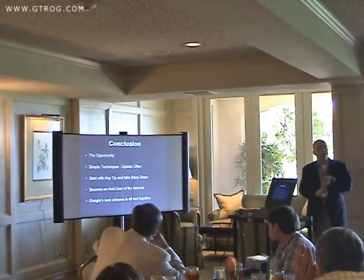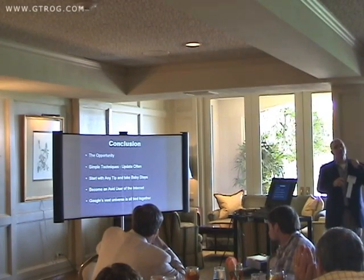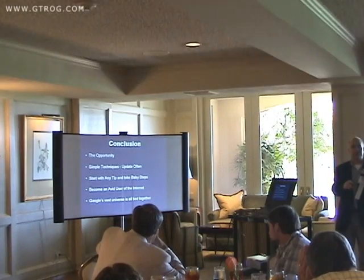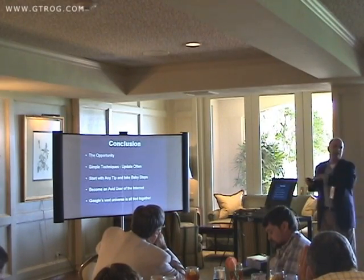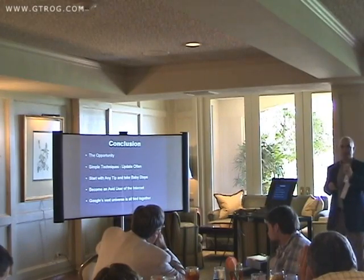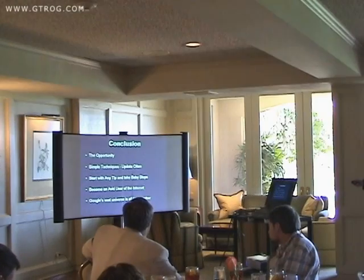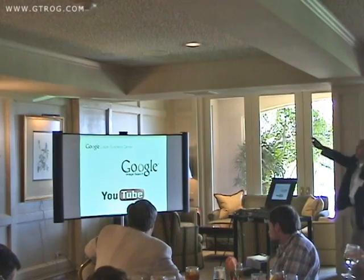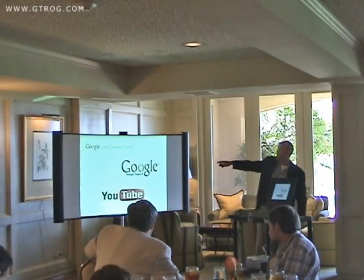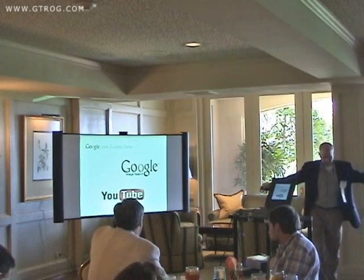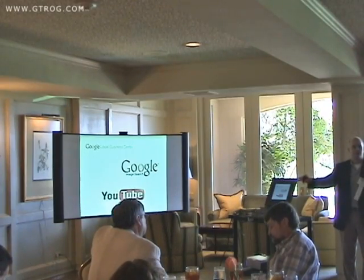In conclusion, I hope I've gotten you excited about the opportunity on the internet. These are simple techniques, but do them often. Google knows how often your website has been updated. Those little programs they call spiders go out and crawl the internet, hitting your website probably at least once a week and taking a quick snapshot — they can tell if anything's changed. We talked about Google Local Business, now called Google Places, Google image search, and YouTube. Google is looking across all their entities and making the connection. If you're doing things on all of them, you're strengthening that connection.